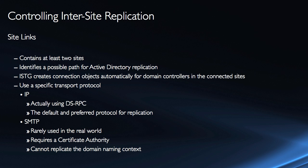When you create a site link, you have two choices for transport protocol. IP is the first — it uses directory services RPC, or remote procedure call, which is the standard method of communication between client and server. This is the default and preferred protocol for replication because there are no restrictions. You do have another option, SMTP, but it's rarely used in the real world due to restrictions: it requires a certificate authority, and it can only replicate the schema and configuration naming context, not the domain naming context. It's there for store-and-forward scenarios, sending replication updates in the form of an email message, but typically we don't have a need for that.